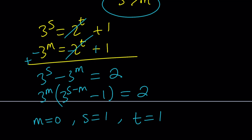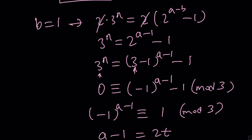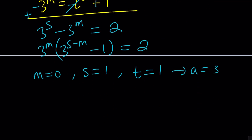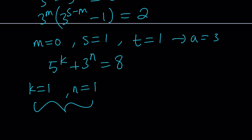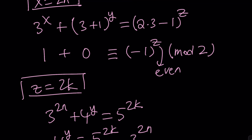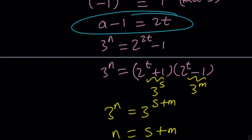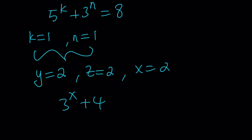Since a equals 3, we get 5 to the k plus 3 to the n equals 2 to the 3, which is 8. This can only happen if k equals 1 and n equals 1. Recalling that x equals 2n and z equals 2k, we find x equals 2, z equals 2, and y equals 2. In other words, this is exactly the Pythagorean theorem — 3 squared plus 4 squared equals 5 squared. And we've also shown there are no other integer solutions.